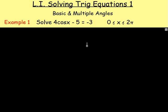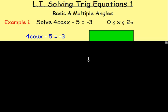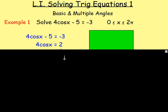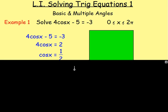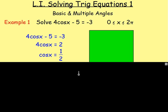Solve 4cos(x) minus 5 equals negative 3, and x is between 0 and 2π. So our answers have to be between 0 and 2π — remember 2π is 360 degrees. To begin with, 4cos(x) minus 5 equals negative 3. The first thing we want to do is get cos(x) on its own. So add 5 to both sides and we'd have 4cos(x) equals 2. Divide by 4 and cos(x) would equal 2 over 4, which is one half.